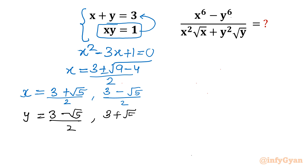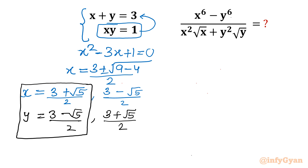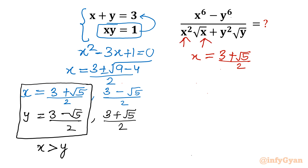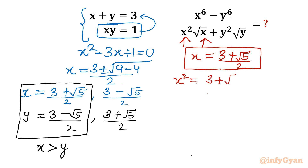Now I am going to consider x greater than y. For this system once we calculate our answer we will write the minus sign for the other case. So I am presuming x equals (3 + √5)/2. We need x² and √x. From x, we will calculate x² first: x² equals ((3 + √5)/2)².